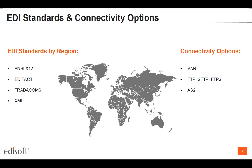On the right-hand side of this screen are connectivity options. When you actually exchange an EDI document with a business partner — whether they are a vendor, supplier, or carrier — there are multiple ways to establish that connection. This is the highway, or the telecom infrastructure, that actually sends and receives documents. There's the VAN, a value-added network, and then different communication protocols within the VAN that could be supported: FTP, SFTP, FTPS, and AS2. These are simply the infrastructure components that allow EDI documents to flow between organizations.